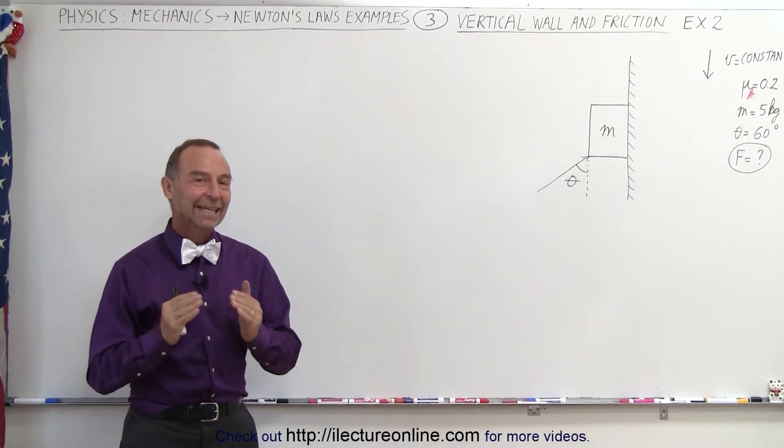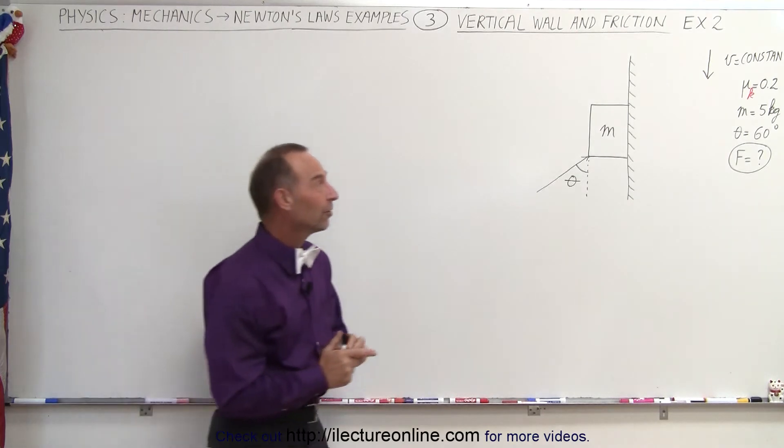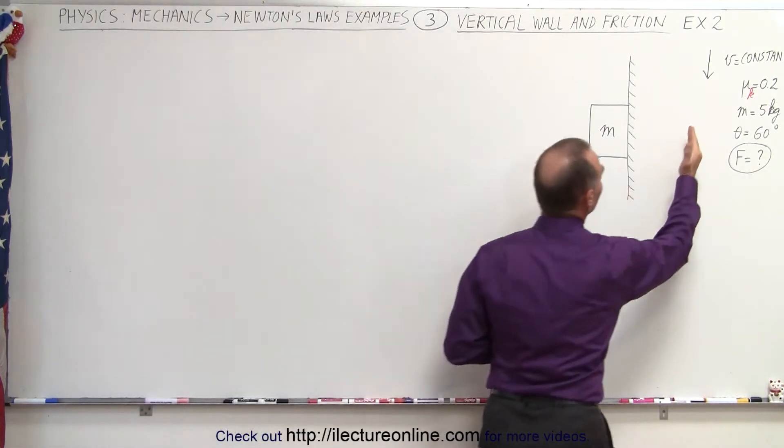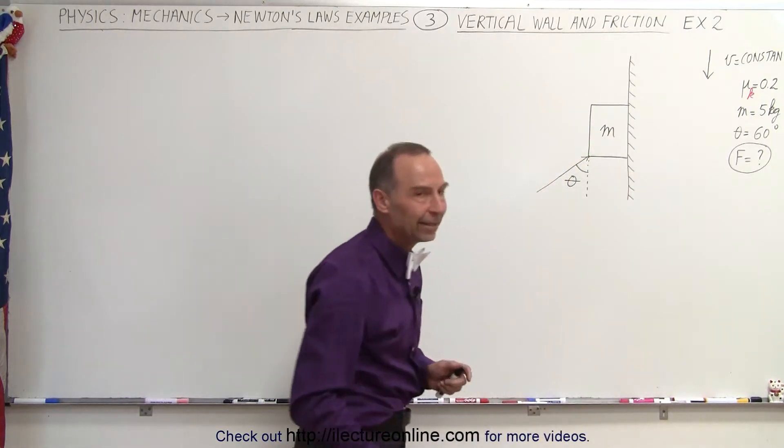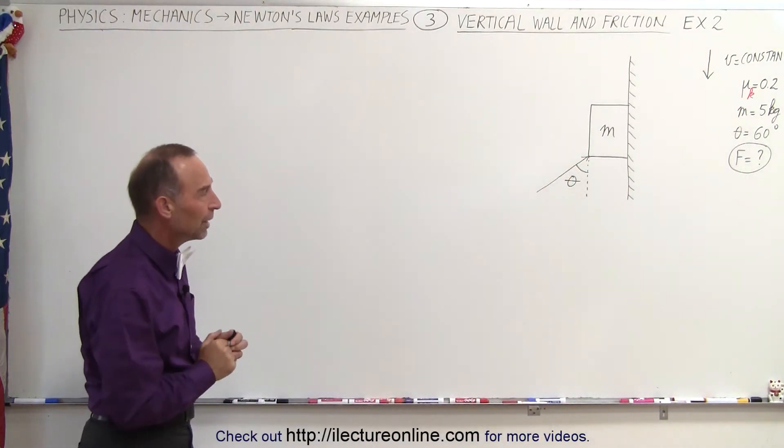Welcome to Electron Line. Here we have the same example as in the previous video with one big difference. Instead of having constant velocity in the upward direction, we now have a constant velocity in the downward direction. We'll change things in a few ways and we'll see in a moment how that's done.